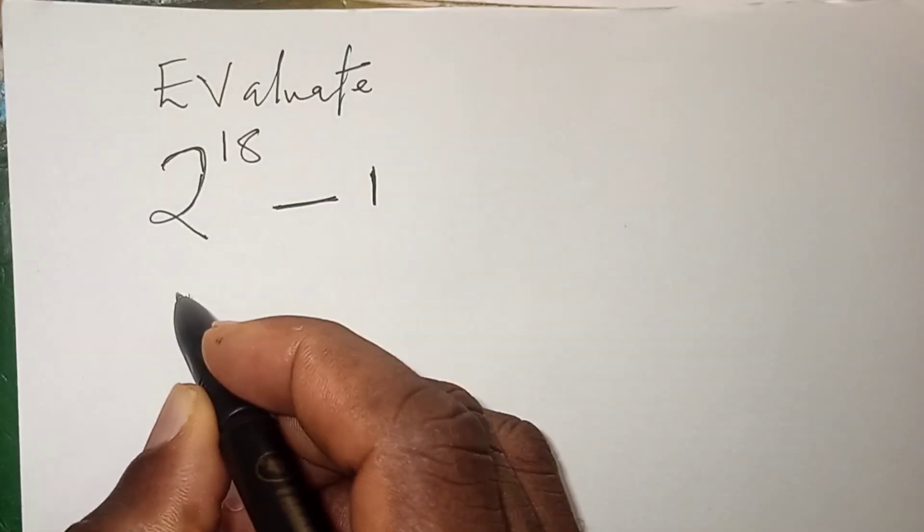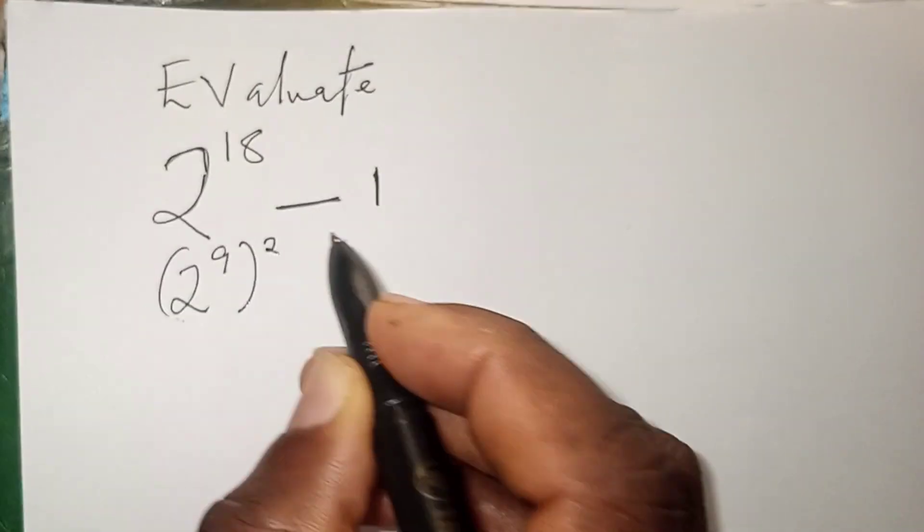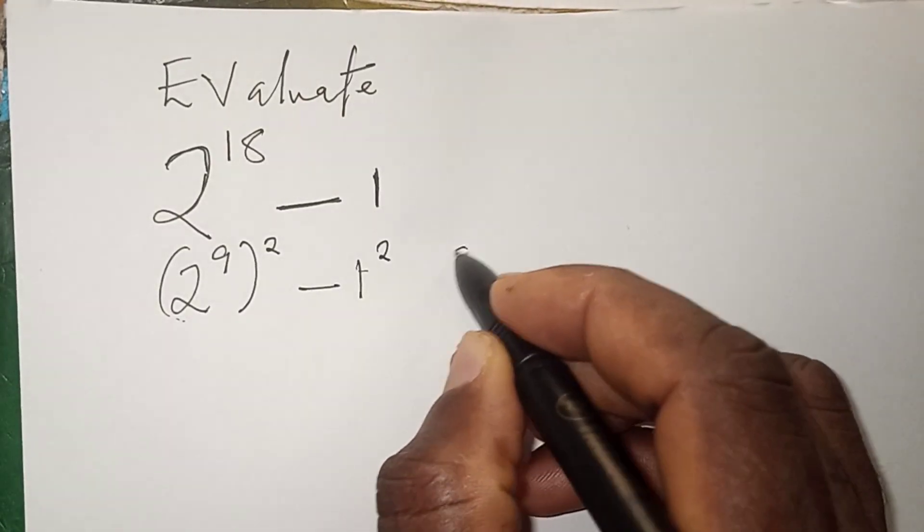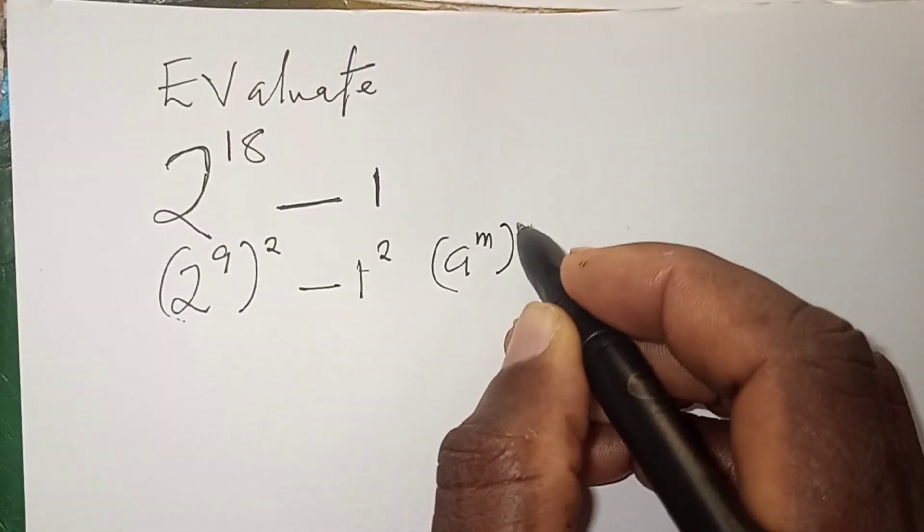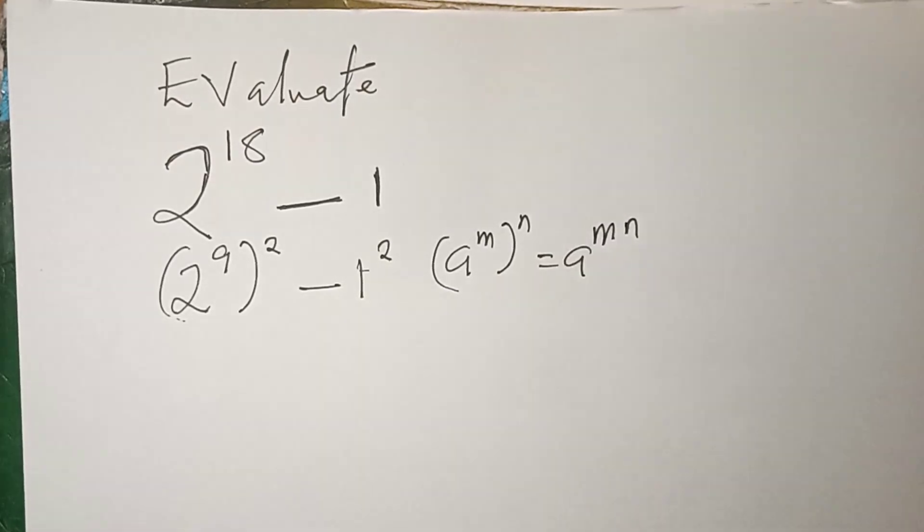We can write this as 2 raised to the power 9 times 2, which is 18, minus 1 raised to the power 2. Because A raised to the power M raised to the power N equals A raised to the power M times N.